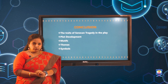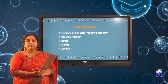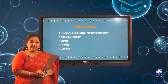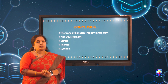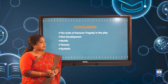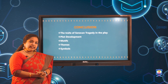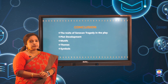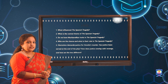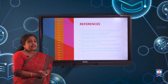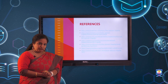Coming to the conclusion, as discussed earlier, we have seen the play is richly embedded with the traits of Senecan elements and tragic elements. We also discussed the plot development, motifs, themes and symbols. These are the frequently asked questions regarding the play, and these are the references used for this presentation. Thank you.